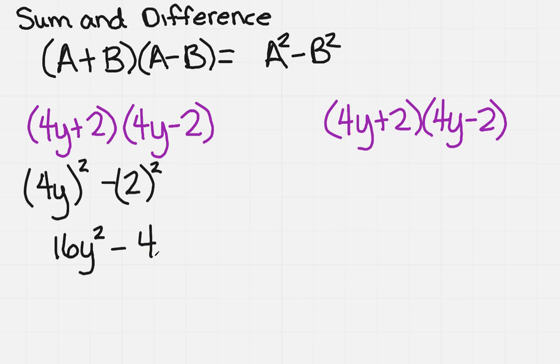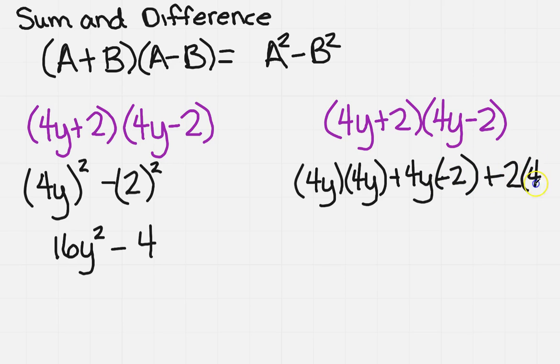Now, let's say you can't remember that, and that's okay. You can use FOIL over here. So I could do 4y times 4y plus 4y times minus 2. I'm sure I'm going to run out of room. Plus 2 times 4y minus 4.